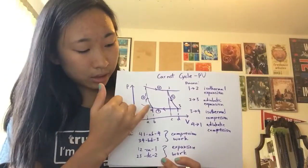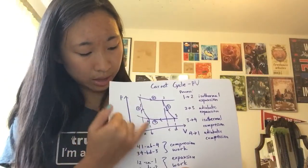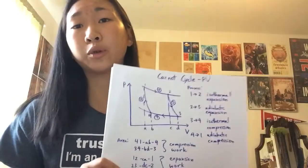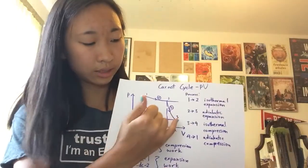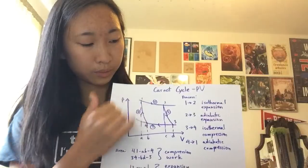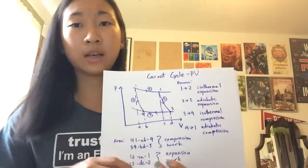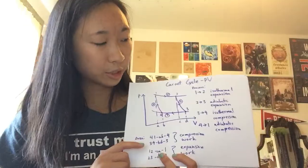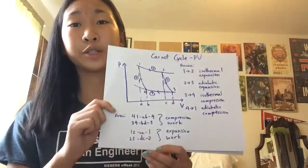In this case, the part I just showed there, because it's negative work, would be compressive work. So in this cycle, these two compressive processes produce compressive work, and the expansion processes create expansion work.